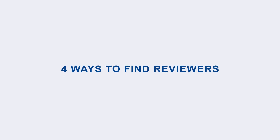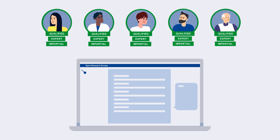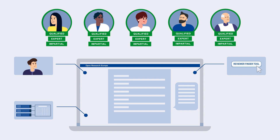There are four ways to find reviewers. Authors can use their knowledge of their field, try out our handy reviewer finder tool, explore bibliographic databases, and look at references cited in their own articles to find suitable candidates.